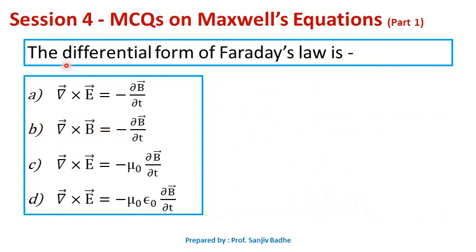Next one: the differential form of Faraday's law is which of the following? The options are: curl of E bar equals minus del B bar by del t; curl of B bar equals minus del B bar by del t; curl of E bar equals minus mu naught del B bar by del t; or curl of E bar equals minus mu naught epsilon naught del B bar by del t. Which one is correct?